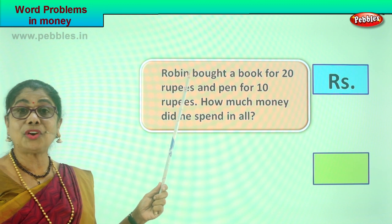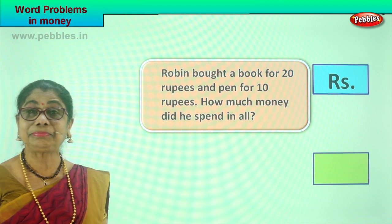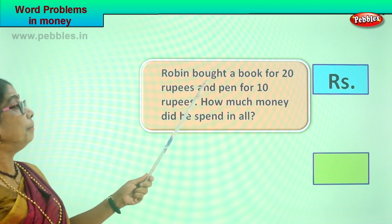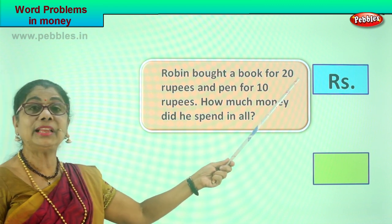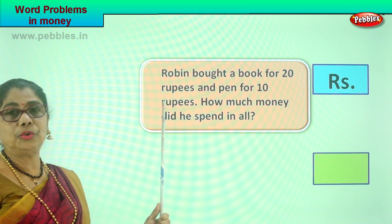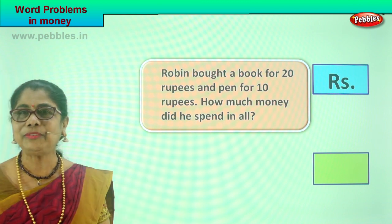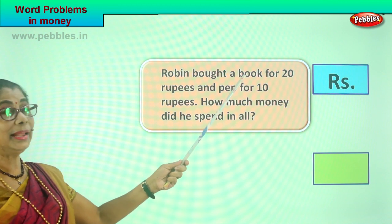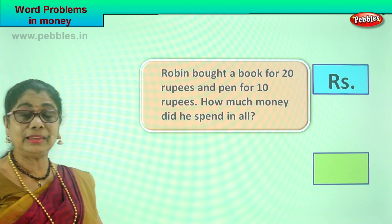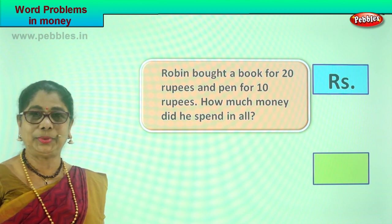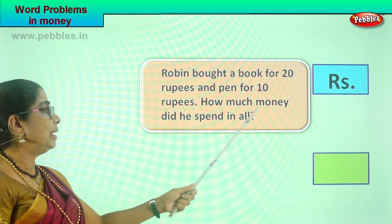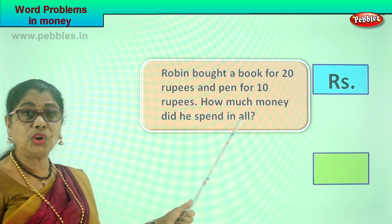Robin. It is Robin who is going shopping, maybe with his mommy. Robin bought a book for rupees 20 and a pen for 10 rupees. So Robin has gone shopping with mommy — he wanted to buy a book for 20 rupees and a pen which costs 10 rupees. Now the question is: how much money did he spend in all?